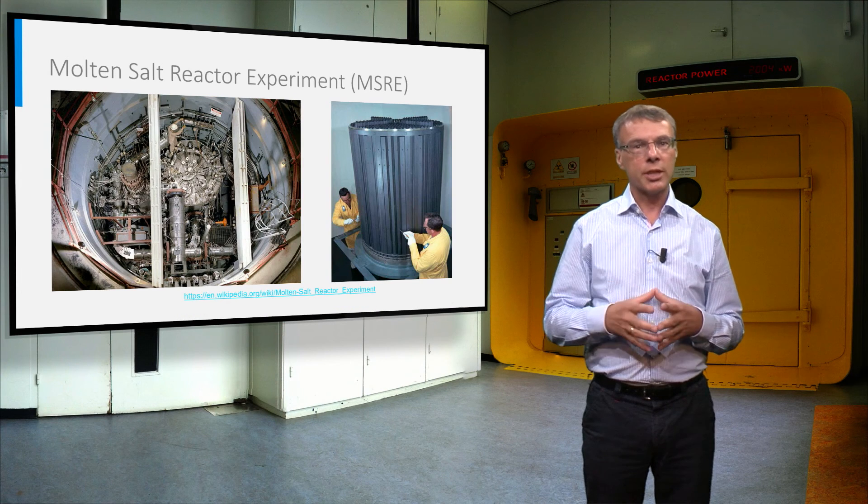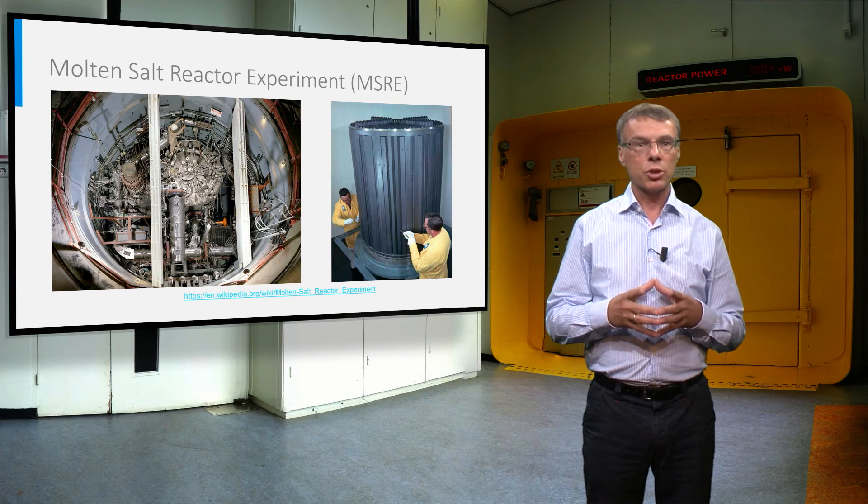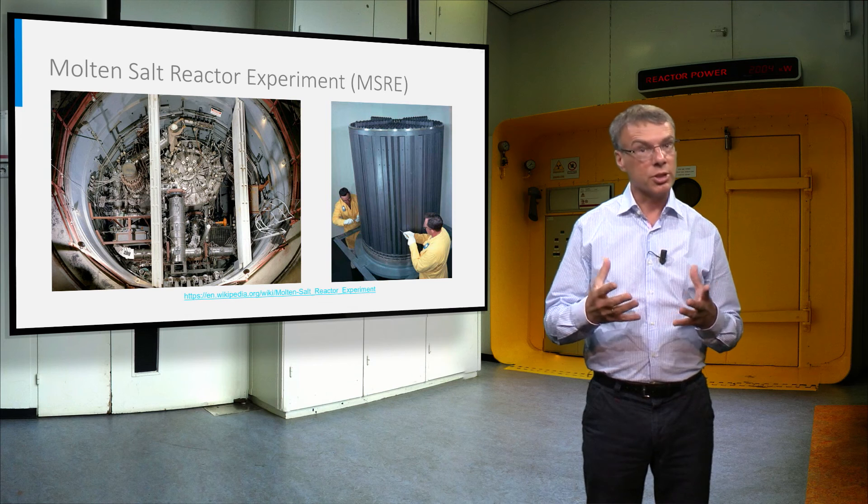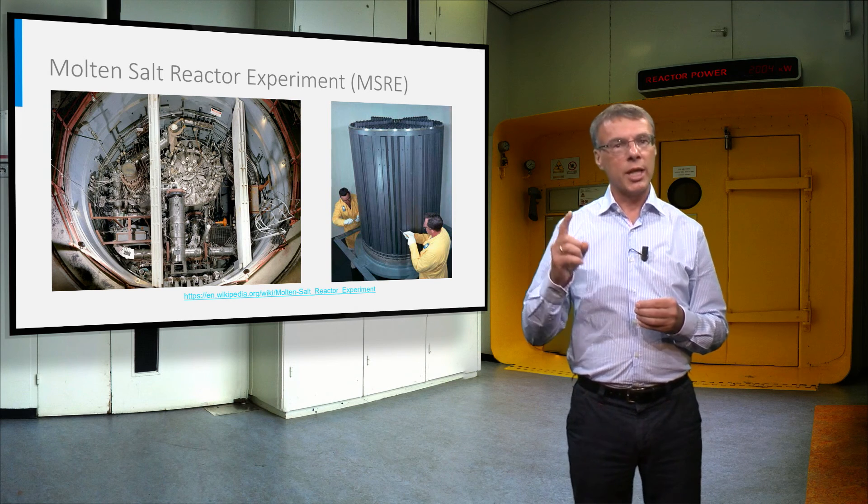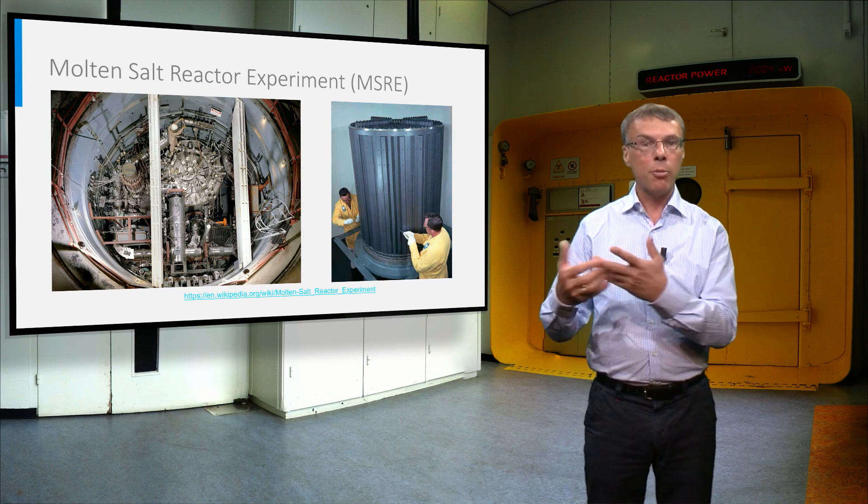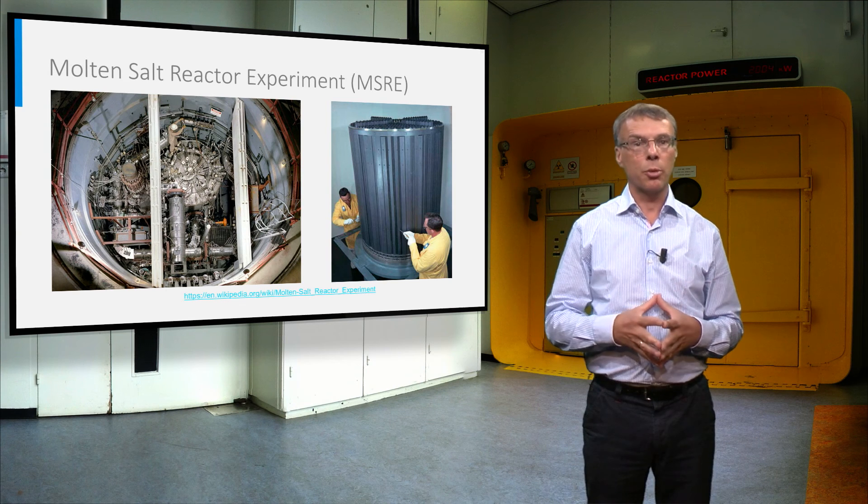The molten salt technology has already been demonstrated in the sixties of last century. The Molten Salt Reactor Experiment ran for four years in Oak Ridge with great success. However, this demonstration reactor contained not yet thorium in the salt, but operated on uranium and plutonium. In this test reactor also the salt was not cleaned during operation.